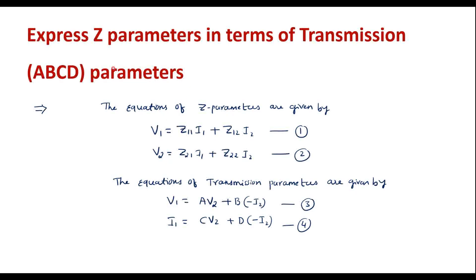Here we have to express Z parameters in terms of transmission parameters. We keep the Z parameter equations as they are and operate on the ABCD parameters. Equation 4 contains variables I1, V2, and I2. Similarly, equation 2 contains variables V2, I1, and I2. So equations 2 and 4 have the same variables.